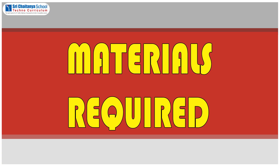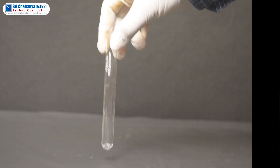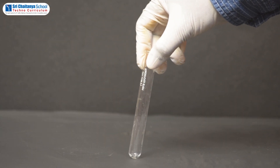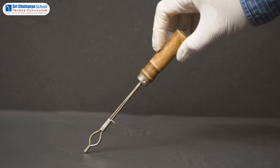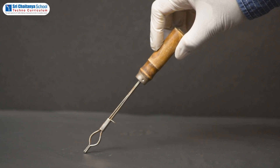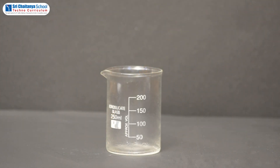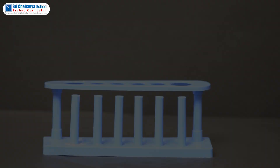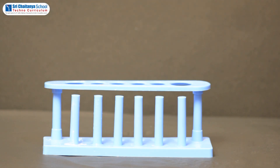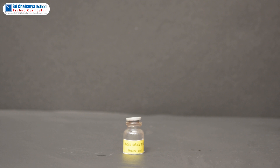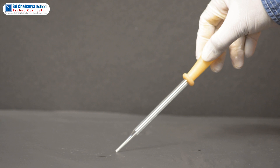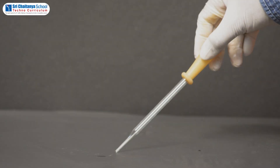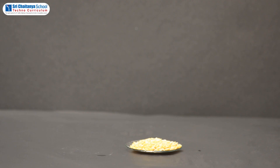The materials that are required are: a test tube, distilled water, test tube holder, beaker, test tube stand, concentrated HCL solution, droppers, and finally some amount of dal.